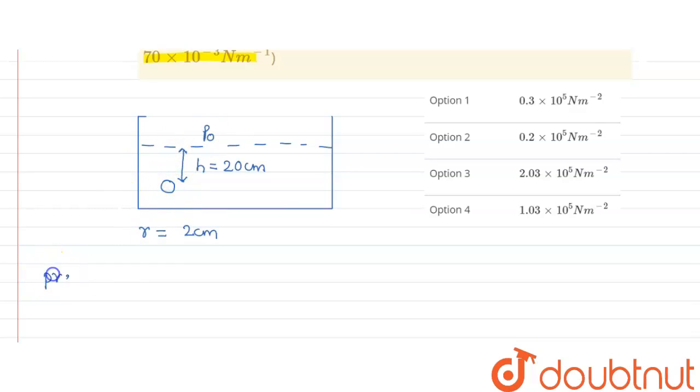So pressure inside air bubble will be atmospheric pressure which is p0 plus pressure due to height which will be rho g h plus excess pressure. Since it is an air bubble, the excess pressure will be 2T upon R where T is the surface tension and R is the radius of air bubble.